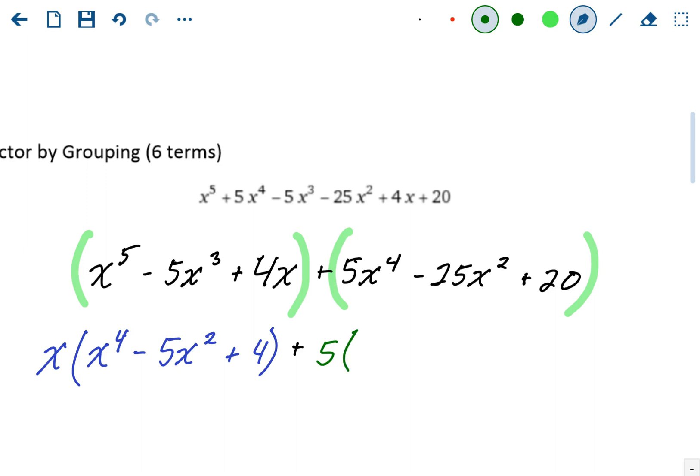So go to each term and take away a 5. We're going to divide each number by 5. That leaves behind x to the fourth, minus 5x squared, plus 4.